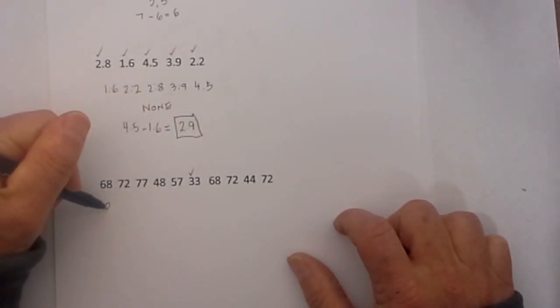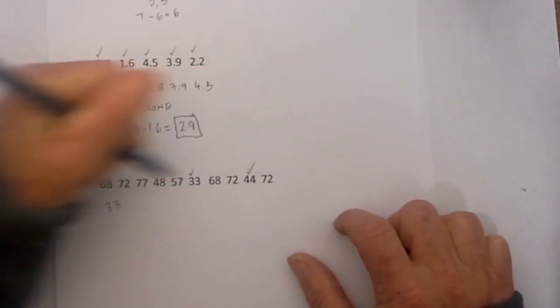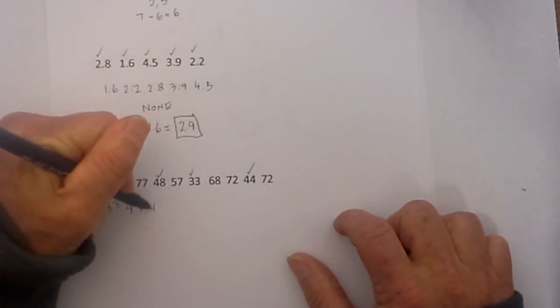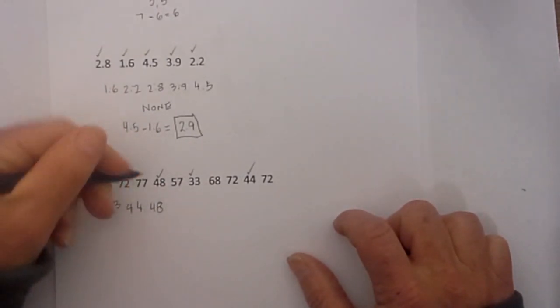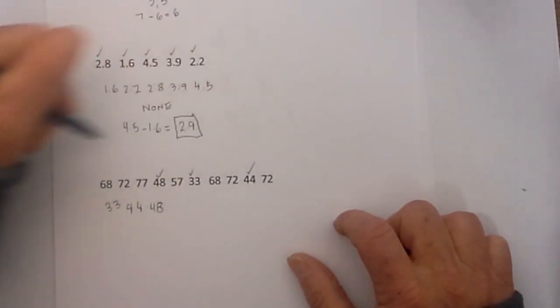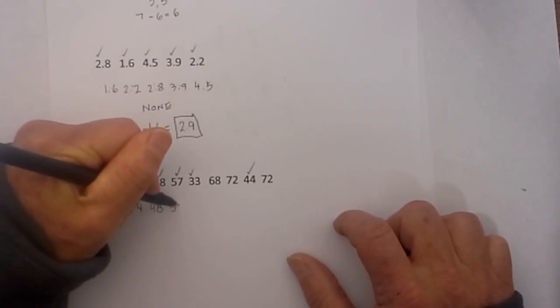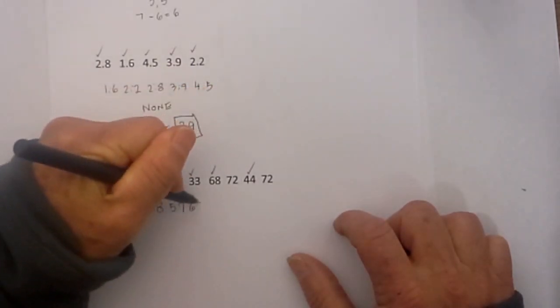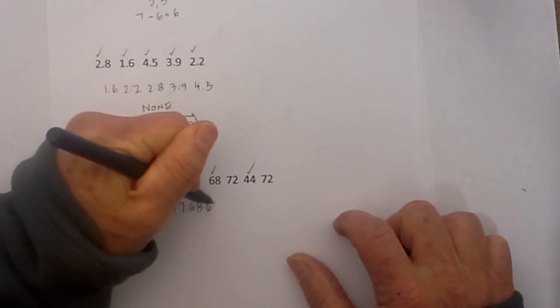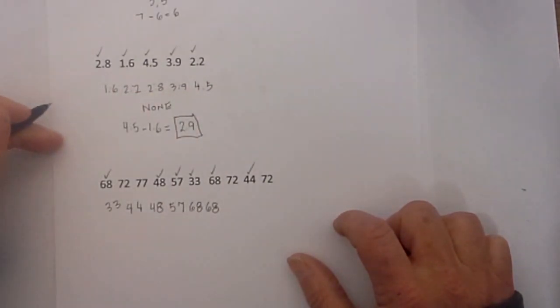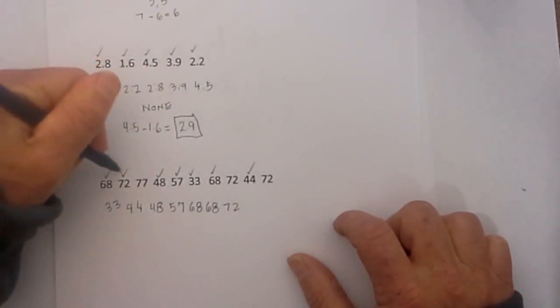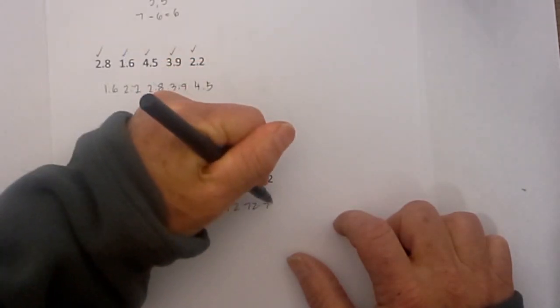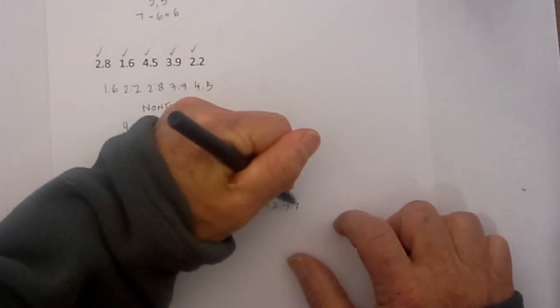So I am going to start at 33 and then 44 and then 48, and then after 48 looks like 57, and then next we have 68 and we have another 68, and next we have a 72 and then we have another 72 and another 72, and then finally we have a 77.